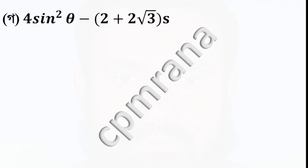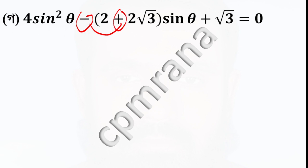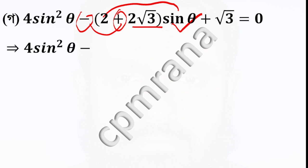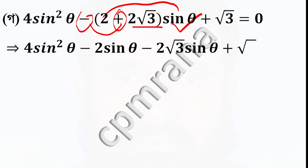Here we have 4 sin squared theta minus 2 plus 2 root 3 sin theta plus root 3. So here we have minus. Minus is equal to minus. And sin theta is equal to 2 sin theta, and minus 2 root 3 sin theta. So here we have 4 sin squared theta minus 2 sin theta minus 2 root 3 sin theta.